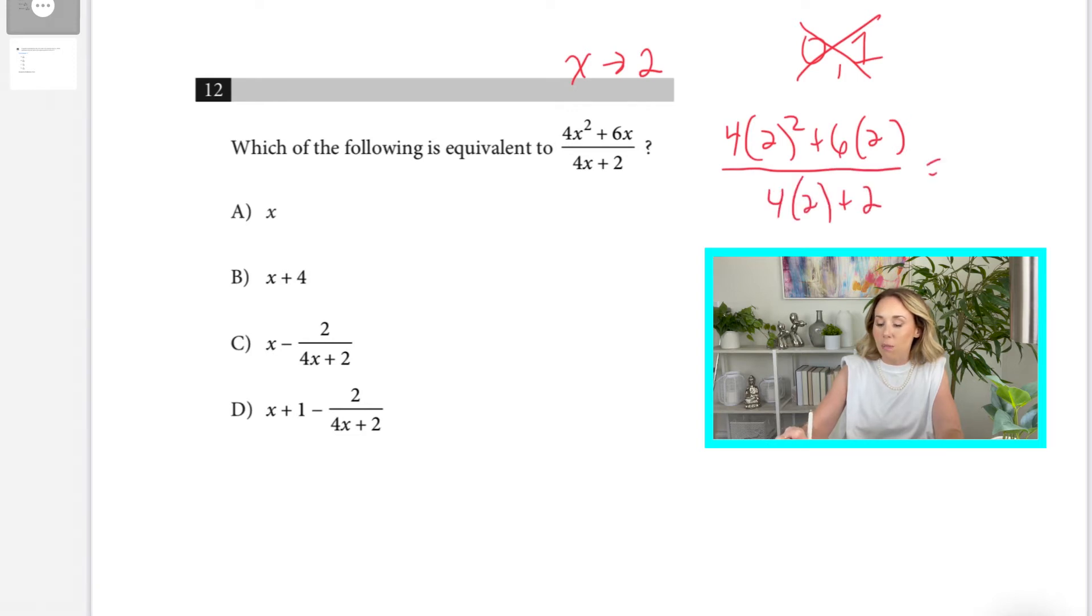Now, when we use PEMDAS and we simplify, we end up getting 28 over 10. And I already know this because I did this problem. Make sure you show your work. Don't take a shortcut like me. Just take my word for it. So, you get 28 tenths. Leave it as an improper fraction. Don't reduce it. Now, you can take what you put for x equals 2 and put them into all the answers until one matches.